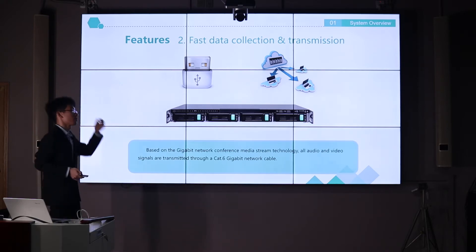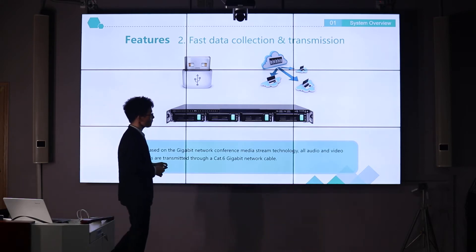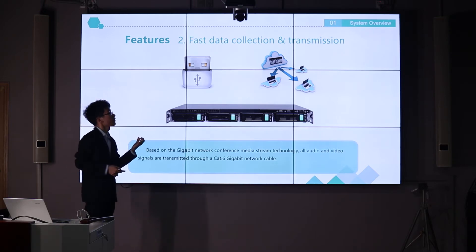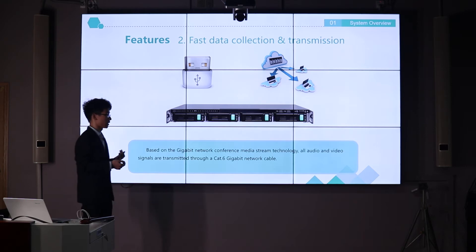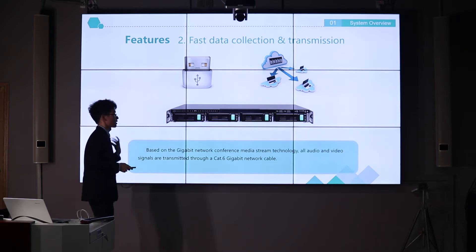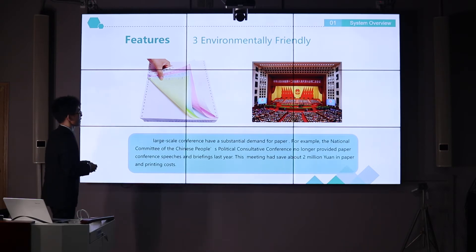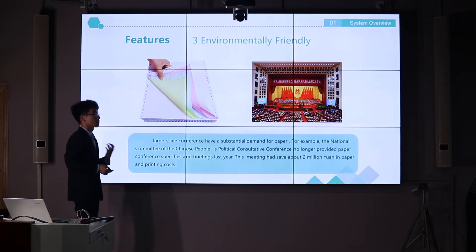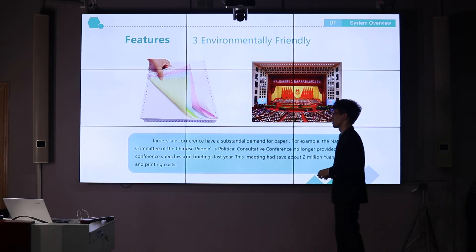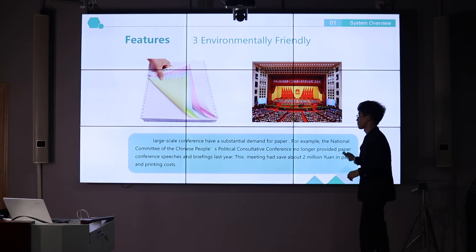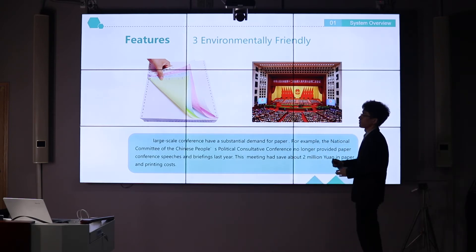The system has fast data collection and transmission functions, so all data can be received on the servers and easily shared to all participants during the meeting. You can also use USB devices to upload profiles to the server and share them to other users in a very short time. Because everyone uses touch screens and PCs, we no longer need paper. In a Chinese meeting for example, using this paperless system can save about 2 million yuan in paper and meeting costs.